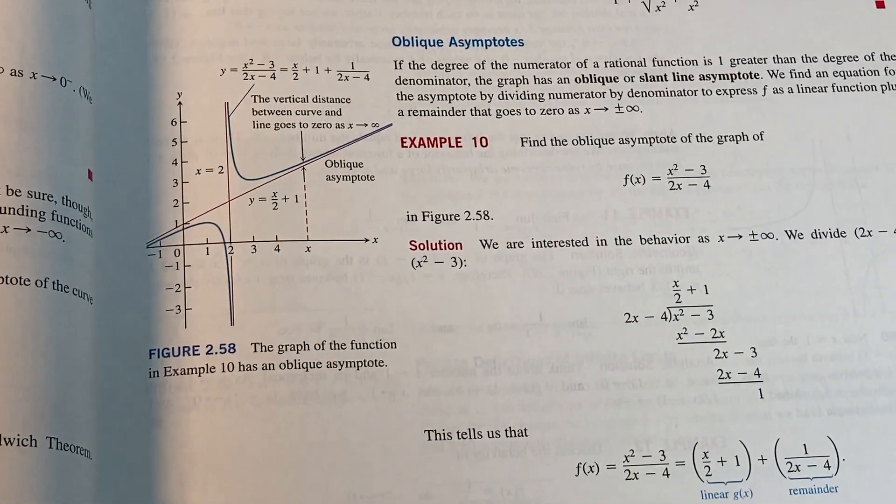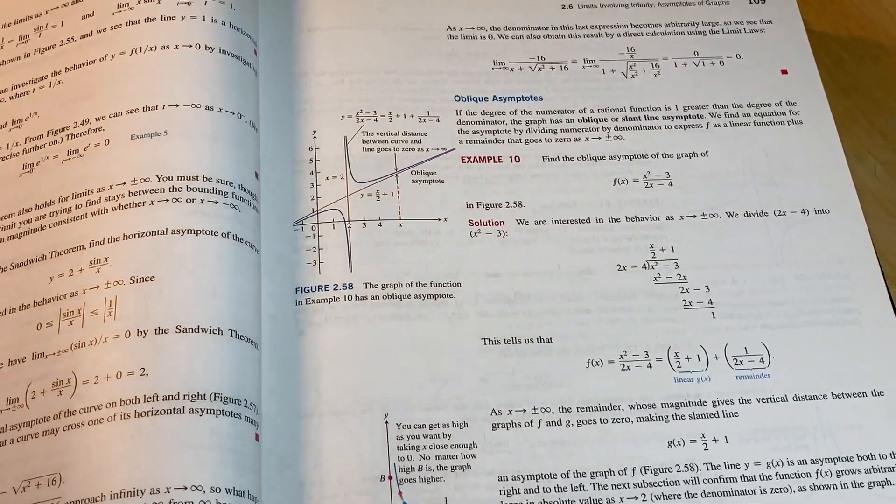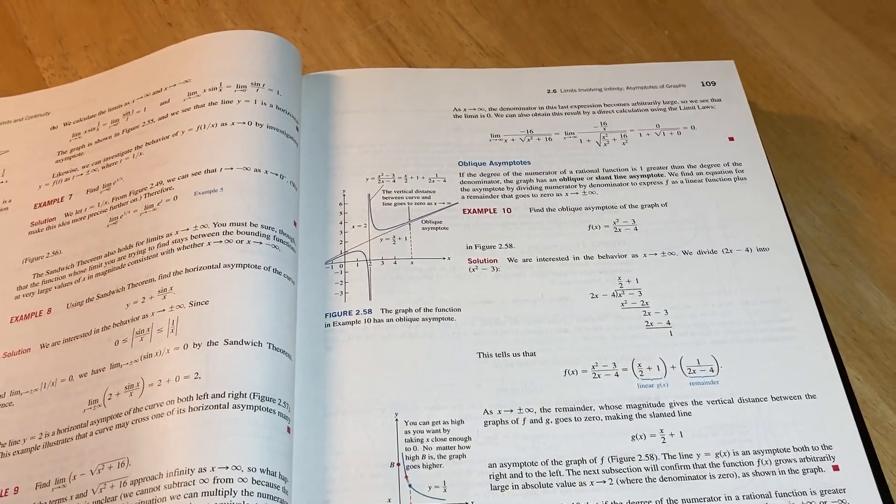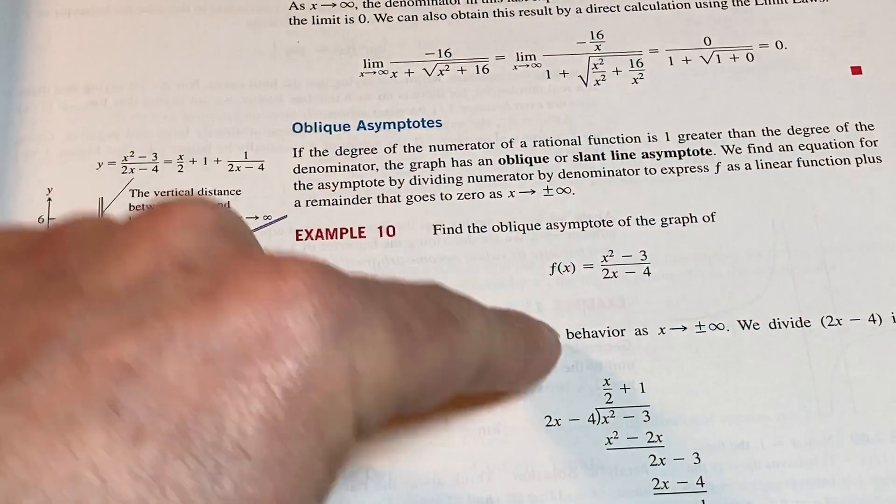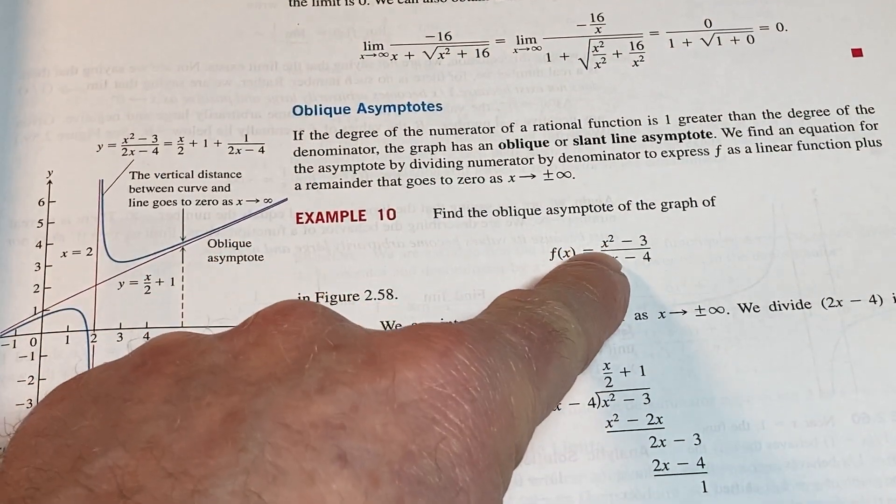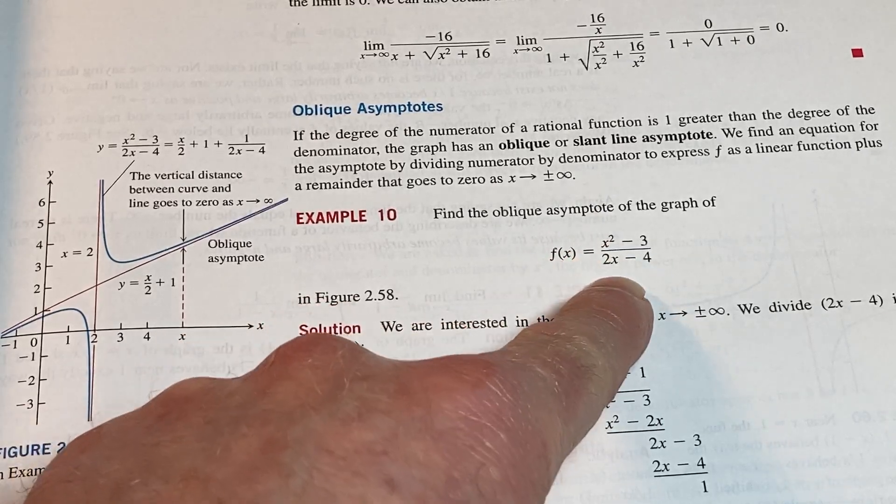Oblique asymptotes, which are also called slant asymptotes. You're asked to find one there. Pretty cool. A rational function will have an oblique asymptote when the degree is exactly one higher. See how the degree in the numerator is two and the degree is one?